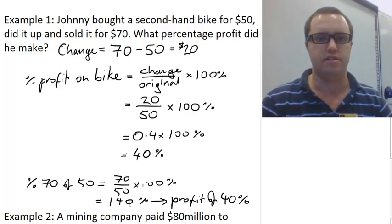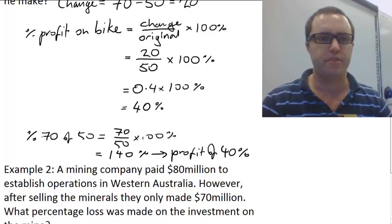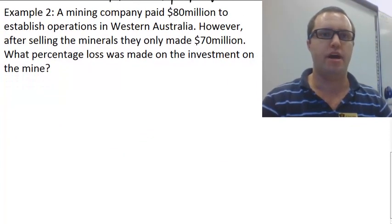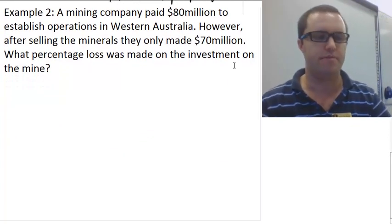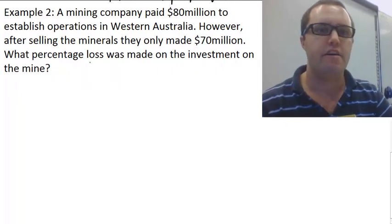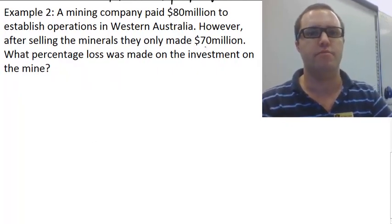Second example: a mining company paid $80 million to establish operations in Western Australia. However, after selling their minerals they only made $70 million. What percentage loss was made on the investment on the mine?